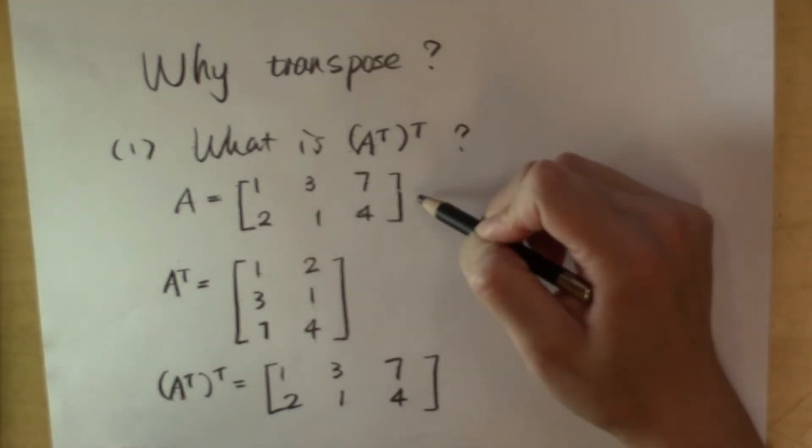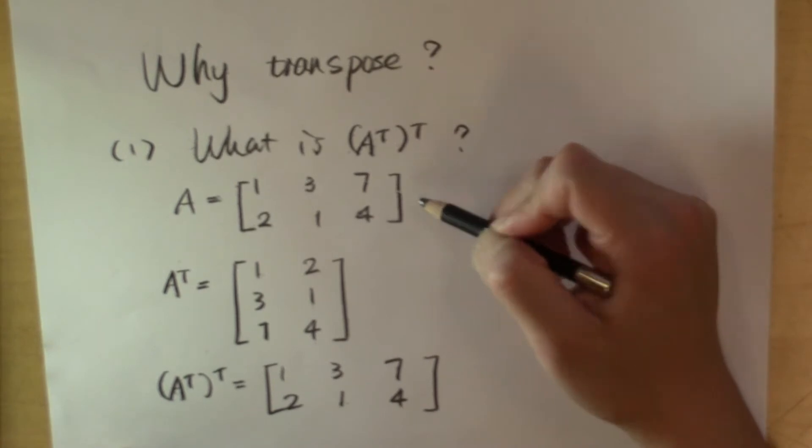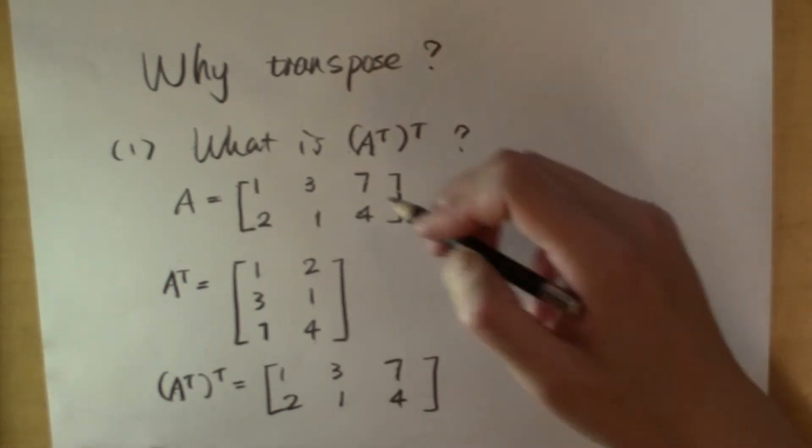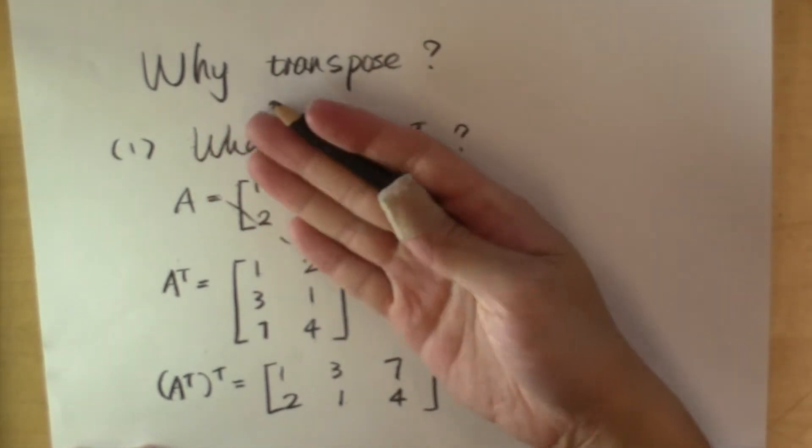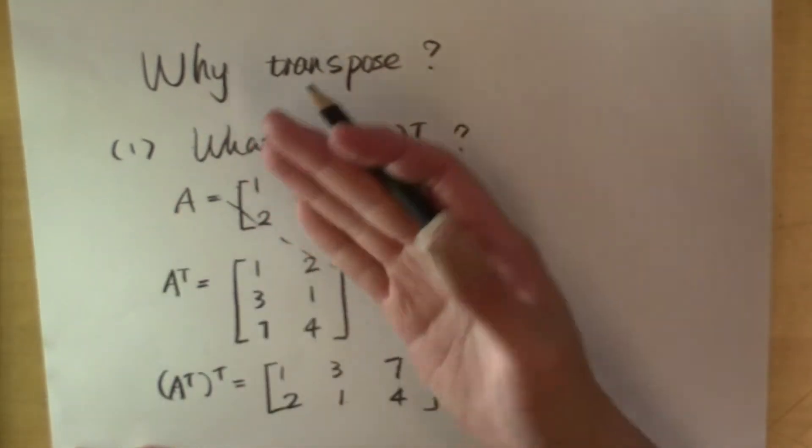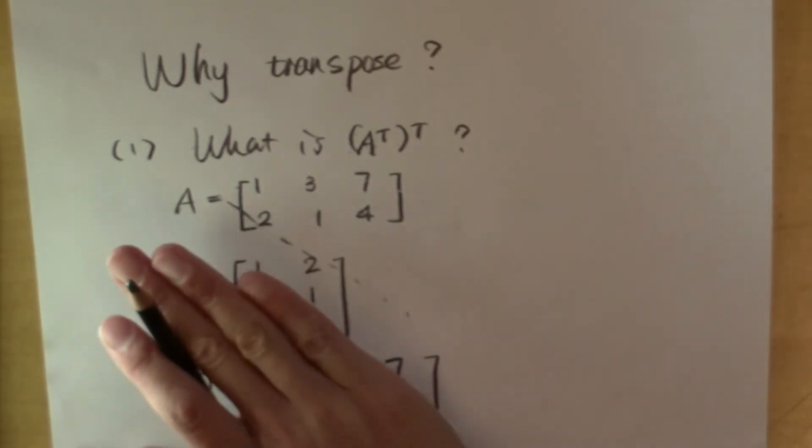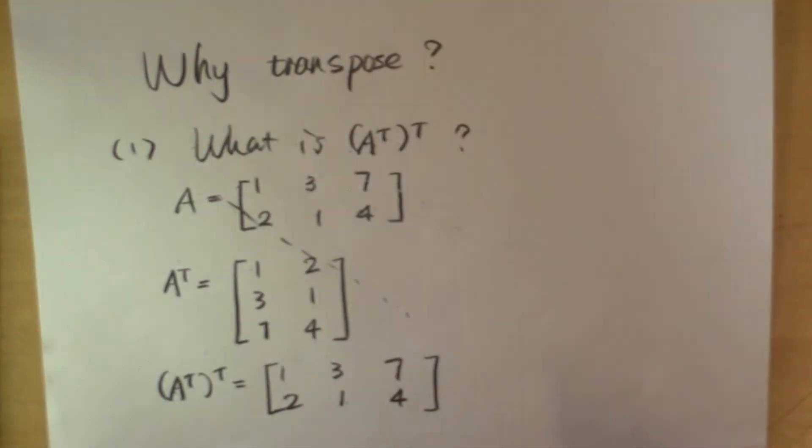It's exactly the matrix A itself. And this is going to be true for every matrix. Because when you take the transpose, you're flipping the matrix with respect to this diagonal line. And when you take the transpose again, you flip it back. So you get the same matrix back.